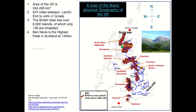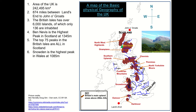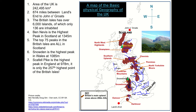There it is. The top seventy five peaks in the British Isles are all in Scotland. So you have to wait until you get to number seventy six to reach Snowdon, which is the highest peak in Wales. And then the highest peak in England is Scafell Pike at nine hundred and seventy eight metres.